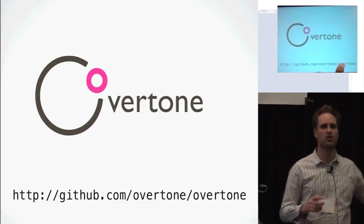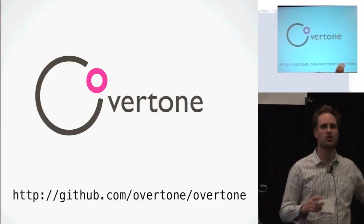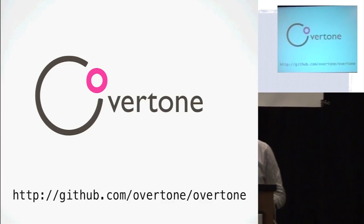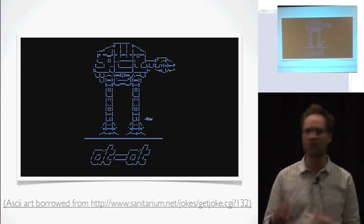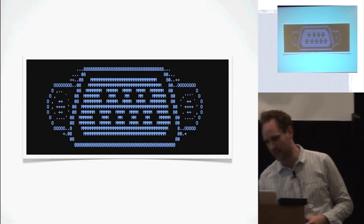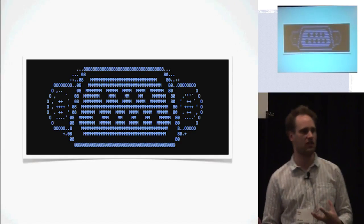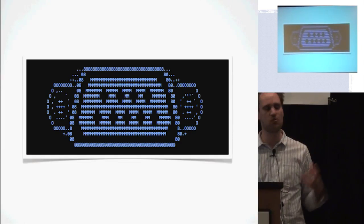Who here has heard of Overtone? The good thing about Overtone is we love ASCII art — we've made a bunch of libraries featuring ASCII art. Here's our 'at' library which allows you to schedule things in the future. We've got a serial port library. And at the heart of Overtone is an open sound control server. If you haven't heard of open sound control, it's kind of like the new MIDI but it communicates over TCP or UDP — really super flexible.